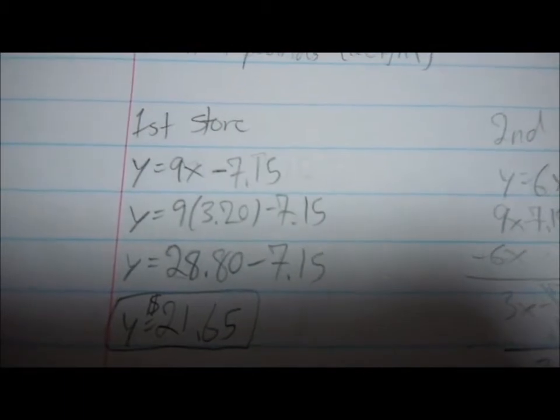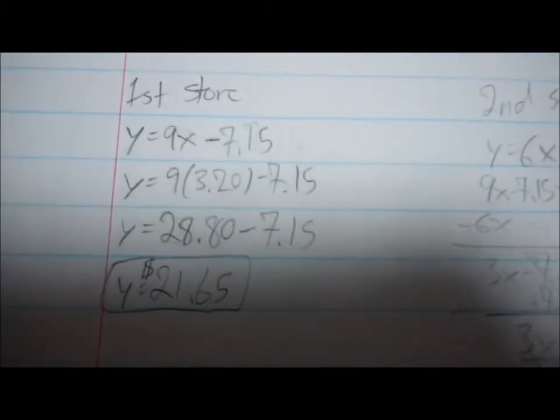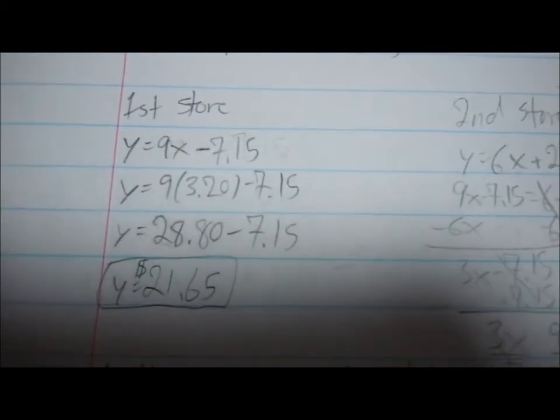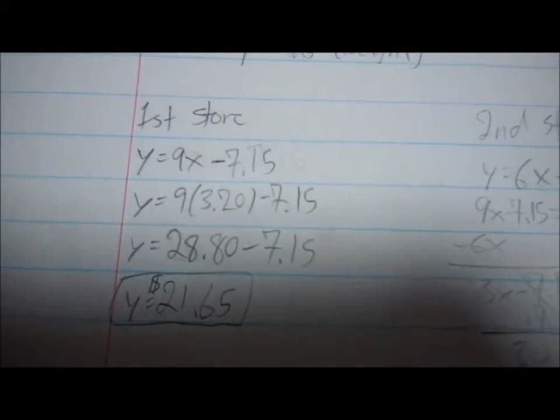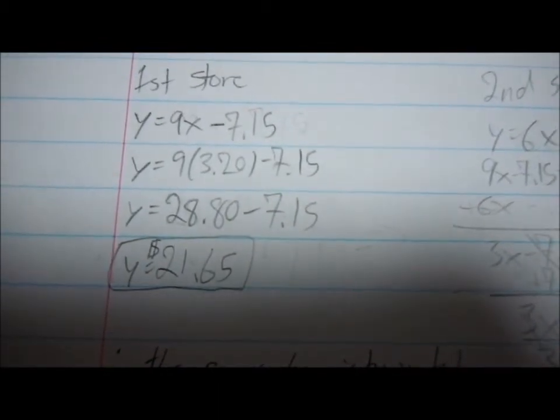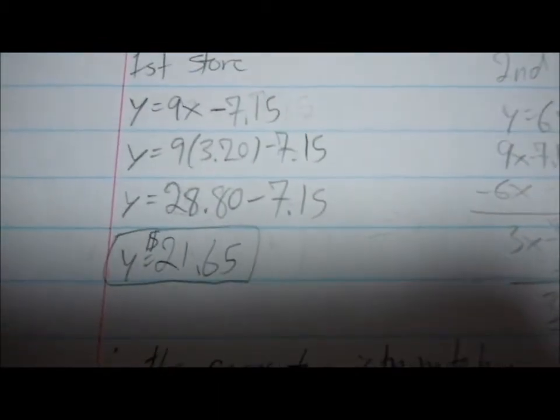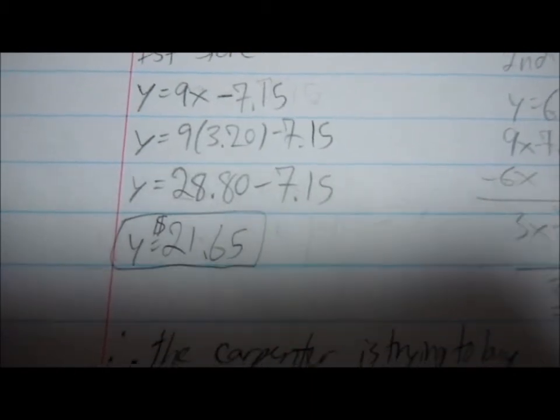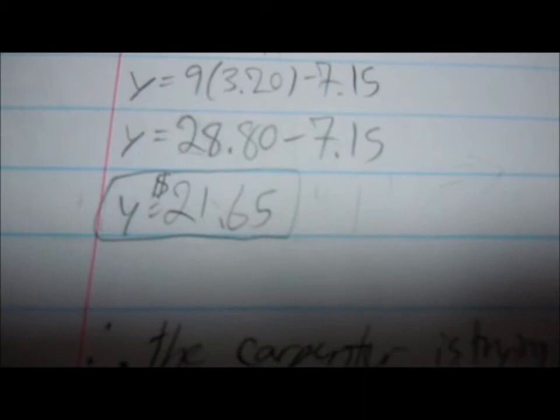Then I'm going to plug in the x into the first store's equation. So it was originally y equals 9x minus 7.15 and became y equals 9 times 3.20 minus 7.15 which becomes y equals 28.80 minus 7.15, and which will become y equals 21.65 dollars.